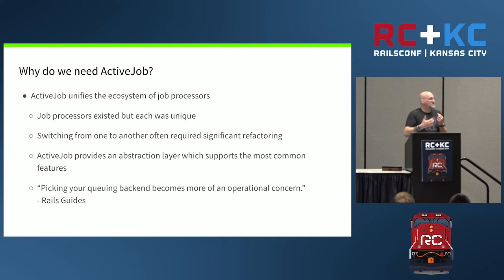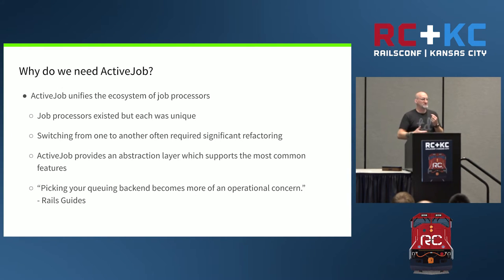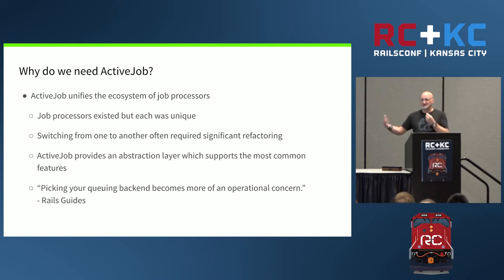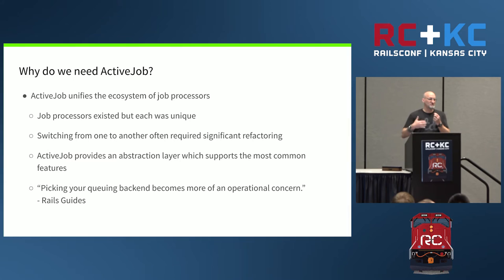Relational databases existed, and Active Record created an abstraction layer over them that allows us to use different databases — and most importantly, run different databases in test, dev, and prod. Active Job does the same thing. It's the abstraction layer that allows us to choose different processors, change processors as our needs change, and run different processors in test, development, and production. Active Job had to do that while supporting the existing tools people were already using. Picking your queuing backend becomes more of an operational concern — you simply write the jobs and use whichever backend makes the most sense for each environment.